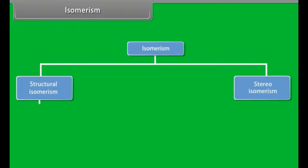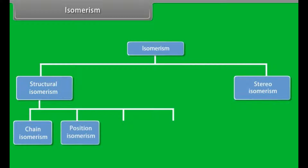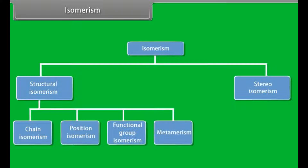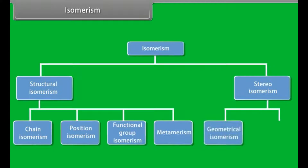Different types of isomerism: Isomerism can be grouped into structural and stereoisomerism. Structural isomerism can be subdivided into chain isomerism, position isomerism, functional isomerism, and metaisomerism. Stereoisomerism is further categorized into geometrical and optical isomerism.